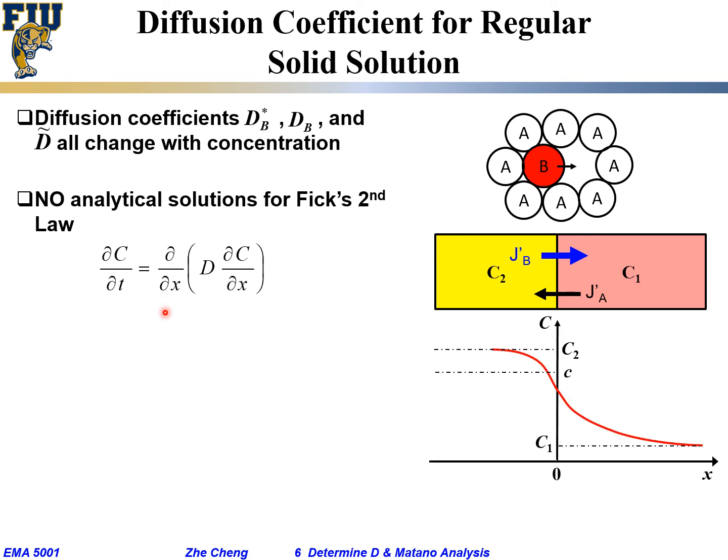But we still, at any given moment, can measure the concentration profile. For a fixed time of diffusion, we can still measure the concentration change with location using whatever depth profiling mechanism. For this piece one, piece two case, we can imagine far away in piece one I have C1, far away from the interface deep in two I have C2, and somewhere in between, if it's assumed they are in the single phase region, then I should have a continuous change.